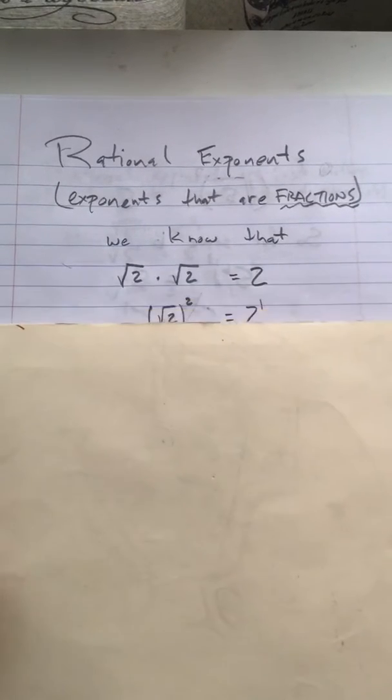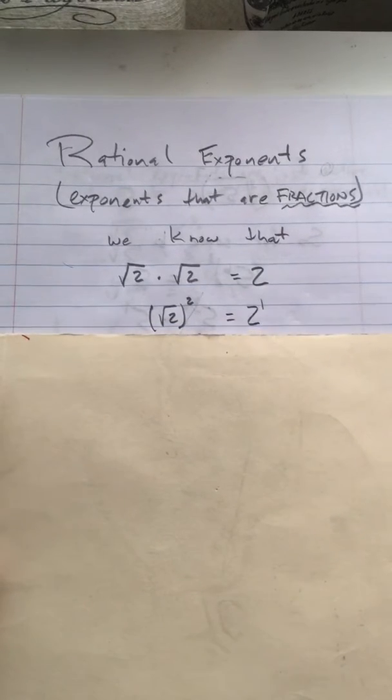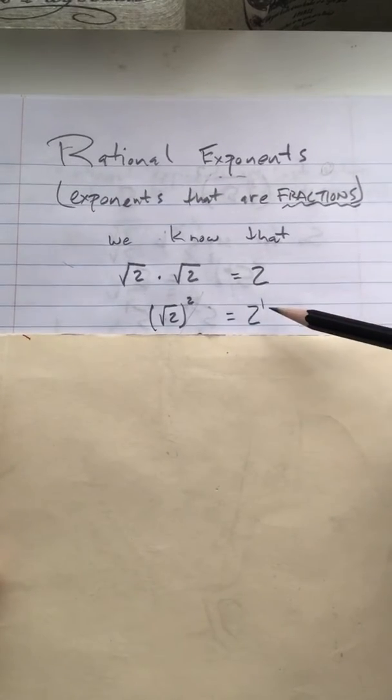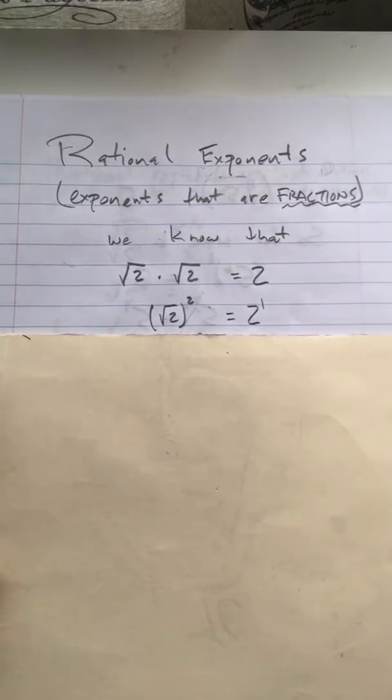Alright, and so another way to write that would be the square root of 2 squared equals 2 to the first power. Normally we don't write that exponent of 1 right there, but you know that it is there for any integer.